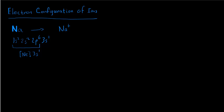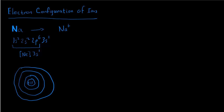If we wanted to draw a picture of that, then in the planetary model, sodium has 11 protons in the nucleus — that's its atomic number — so we have plus 11 for the nucleus. We have our n=1 shell, our n=2 shell, and our n=3 shell. The electron configuration tells us that we've got 2 electrons in the n=1 shell, 8 electrons in the n=2 shell, and then 1 electron in the n=3 shell.